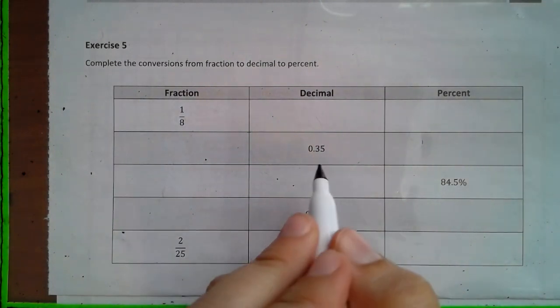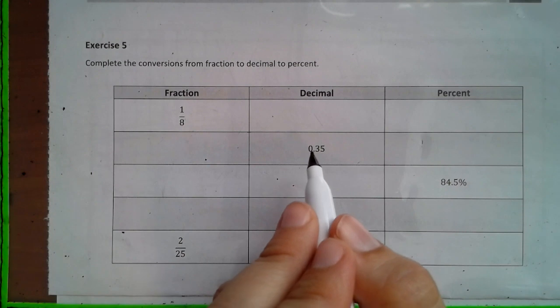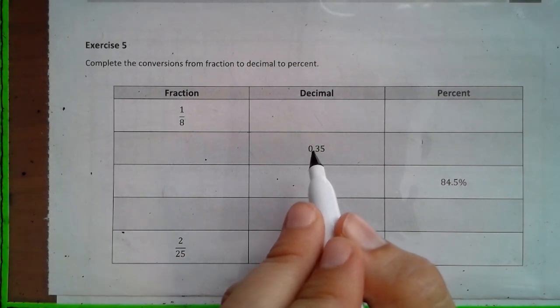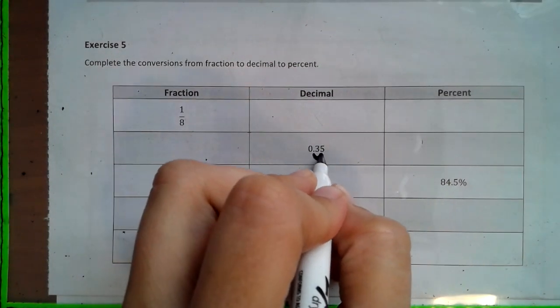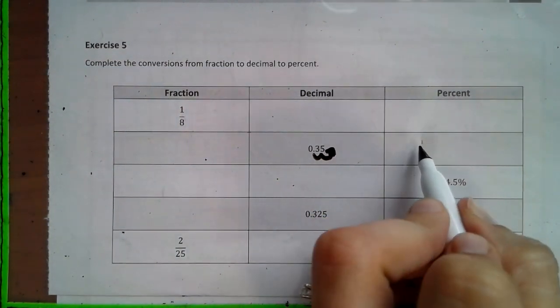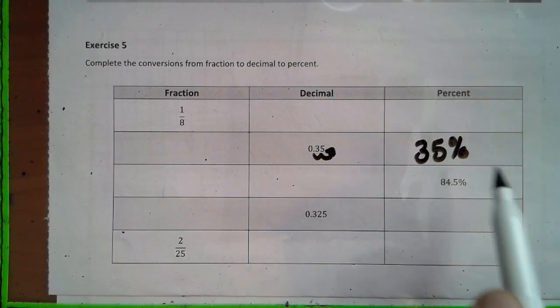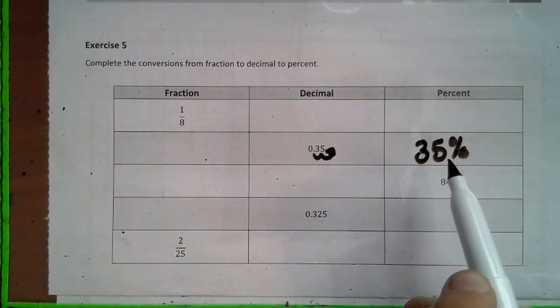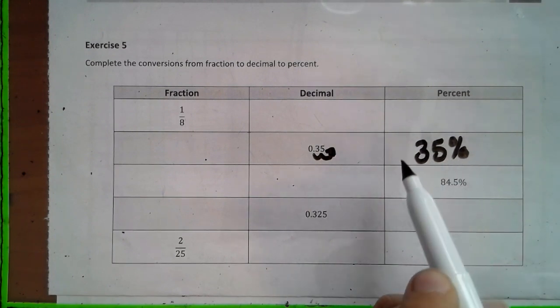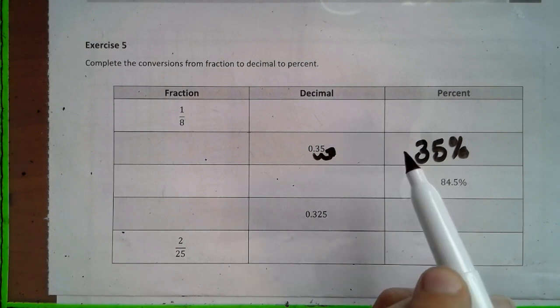If we're given a decimal, we can take the decimal just like I showed you a minute ago, and we could jump two spots to the right, and that will make your percent 35%. If we're going from a percent to a decimal, we can do the exact opposite and go two jumps to the left.